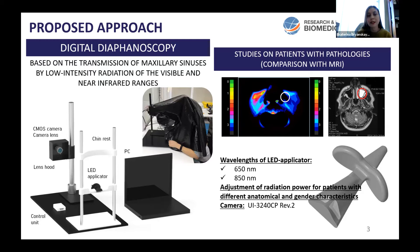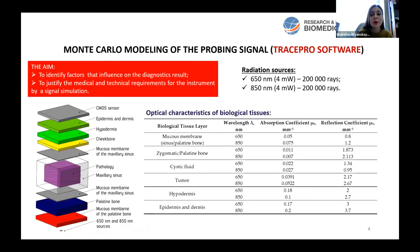During the analysis of obtained results, we noted that there is a great influence of anatomical and gender features on the recorded scattering pattern of light. In order to justify the medical and technical requirements for our device, we carried out a numerical simulation of the magnitude of the decrease in the signal which passes through different biological layers and different pathologies.